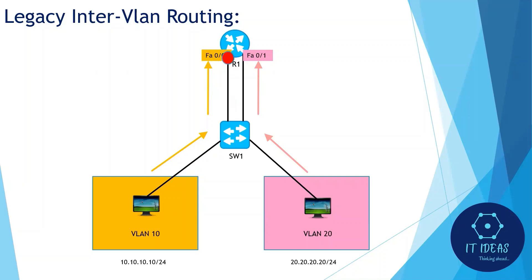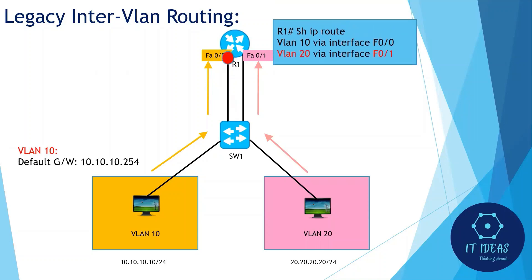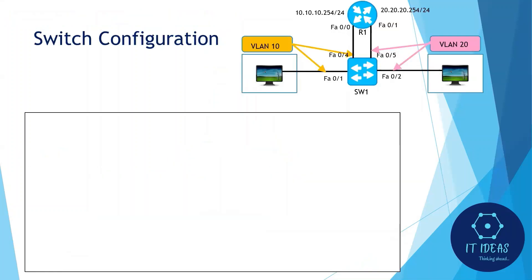The PC in VLAN 10 forwards its packet to its default gateway, which is R1's F0/0 interface. Then R1 routes the packet out another interface F0/1 where VLAN 20 resides. The switch will receive the frame from the router's F0/1 interface and forward it to the VLAN 20 PC. Now let's see how to configure this.